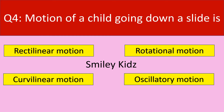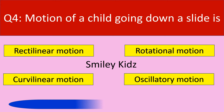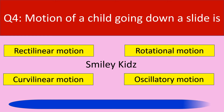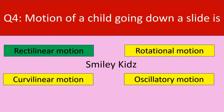Question number 4. Motion of a child going down a slide is. Your options are rectilinear motion, rotational motion, curvilinear motion, oscillatory motion. Your time starts now. Time up. The correct answer is rectilinear motion. Motion of a child going down a slide is rectilinear motion.